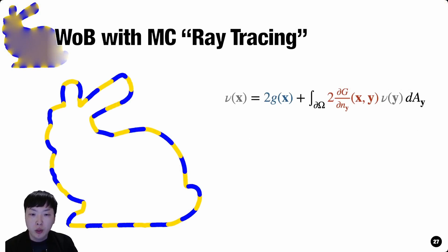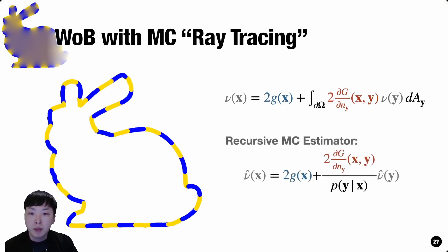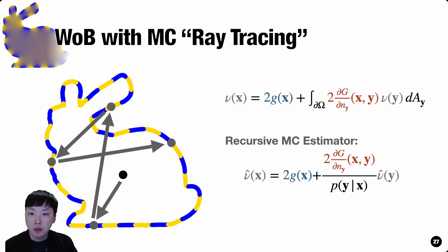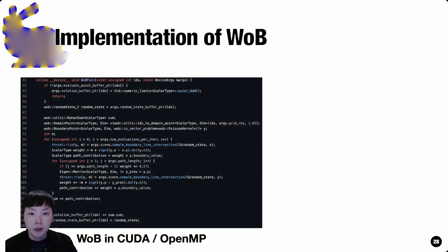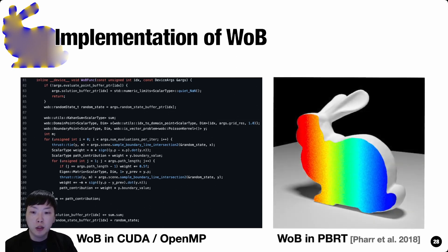Given the underlying integral equation, we estimate the integral with a recursive MC estimator. Similar to MC ray tracing, we sample a point at each step of the walk to construct a path, and then estimate the solution by the average of sample path contributions. In our paper, we terminate paths with a fixed length by accepting some bias, and only for the longest path contributions, we multiply 1/2 as a result of the analysis of the underlying integral equation. The implementation of Walk-On Boundary is simple — we can write the core part in less than 30 lines, and we can also quickly implement it on top of an existing ray tracer like PBRT. We made these implementations publicly available on GitHub to foster further research.